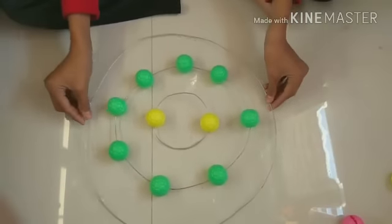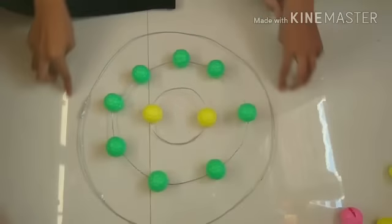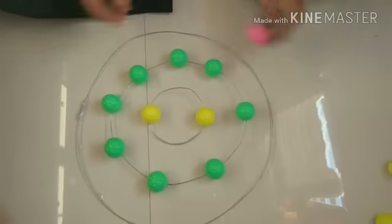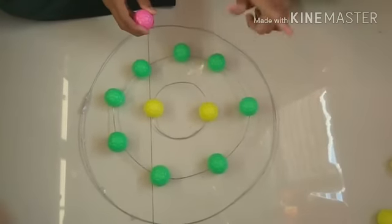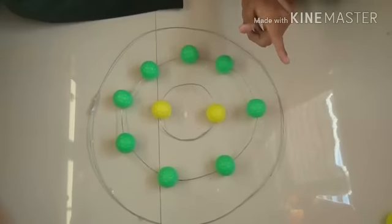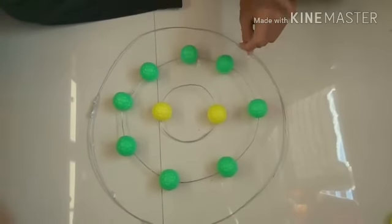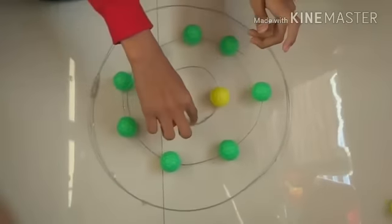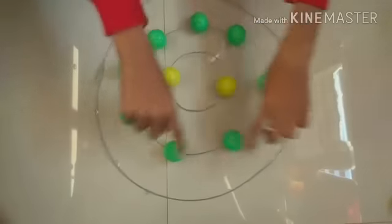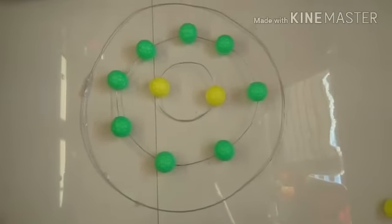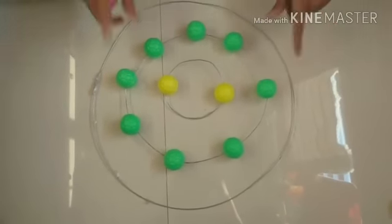Now we are going to make the third layer. In this third layer we are going to insert only 8 balls because there is a rule of Bohr's atomic model that in the first layer only 2 balls, then all the layers infinitely there should be 8 balls only.